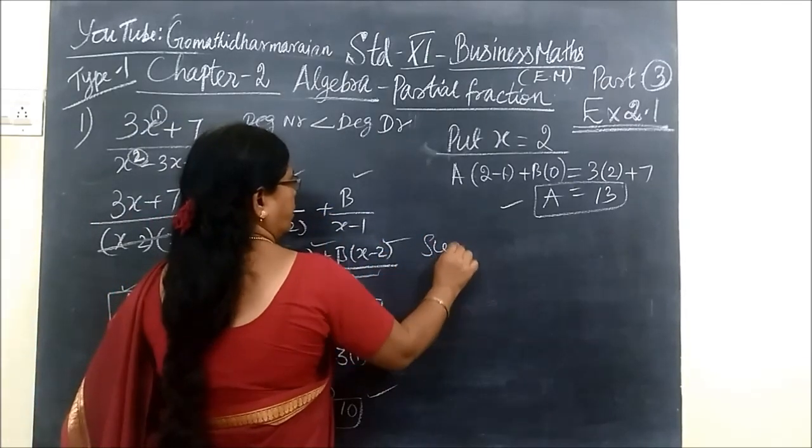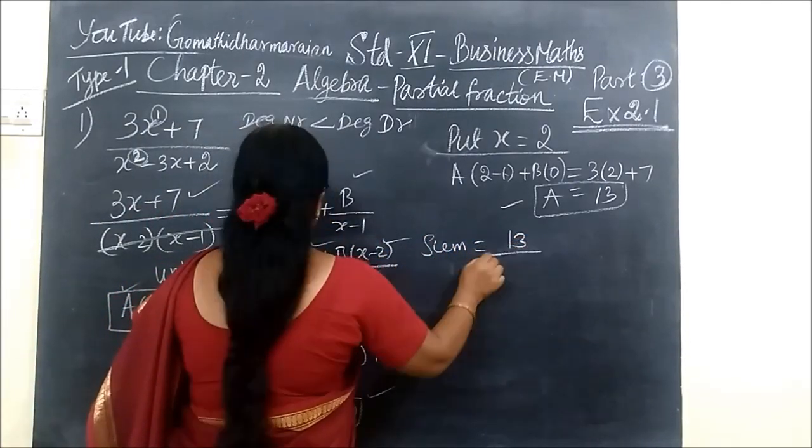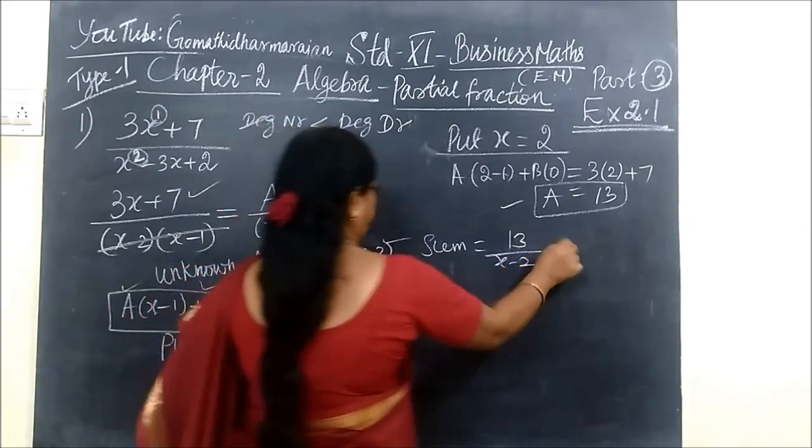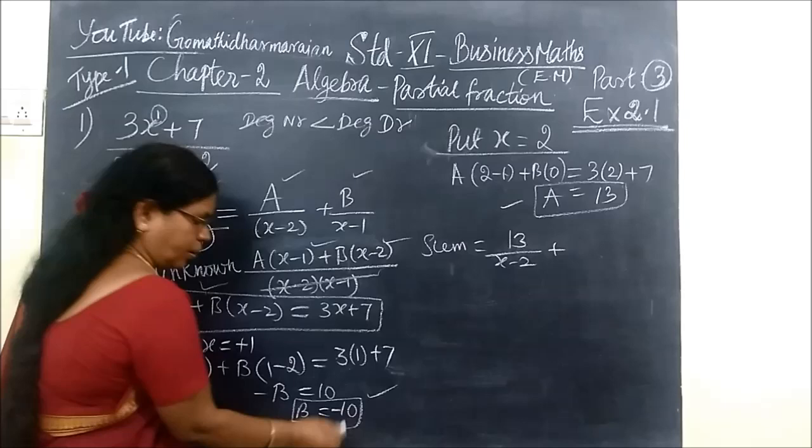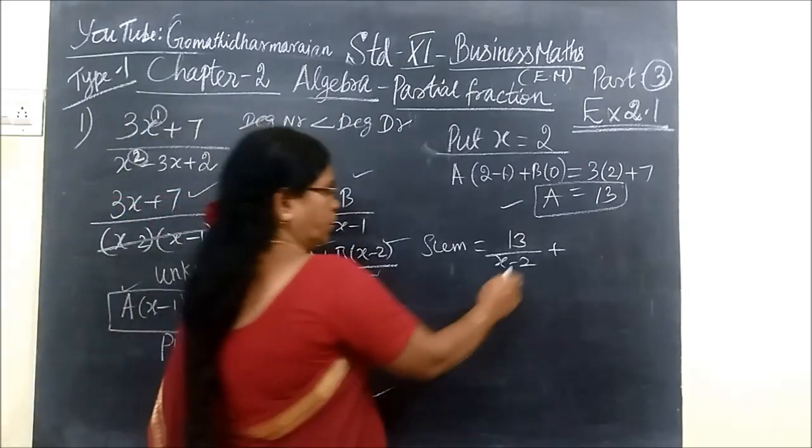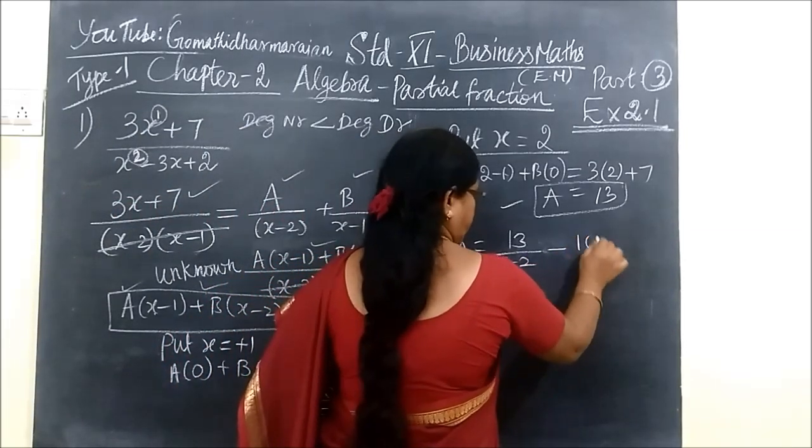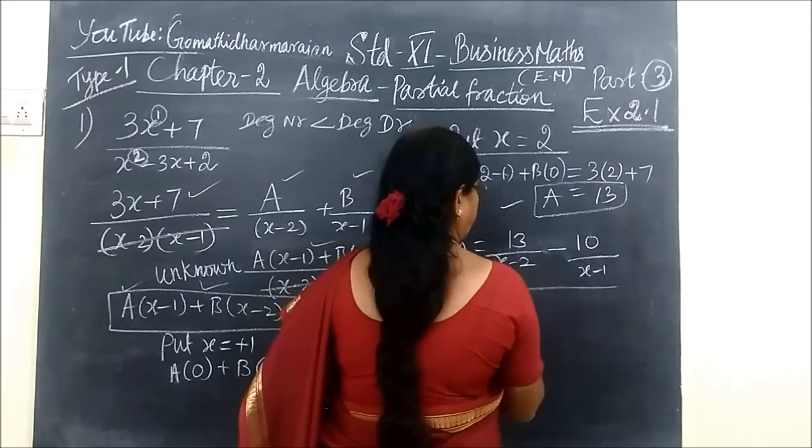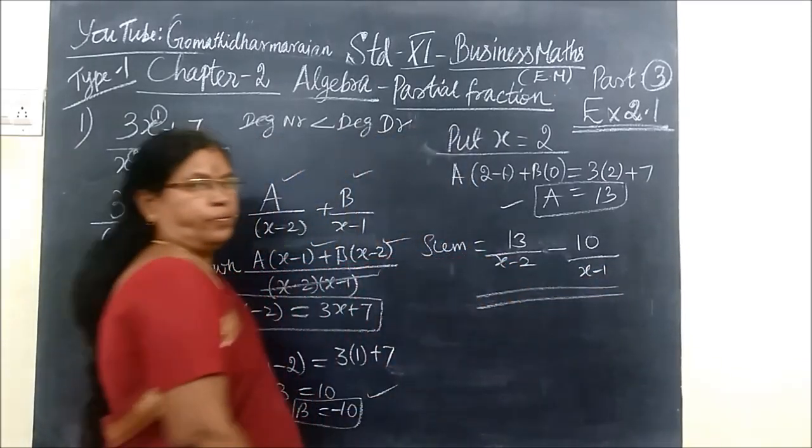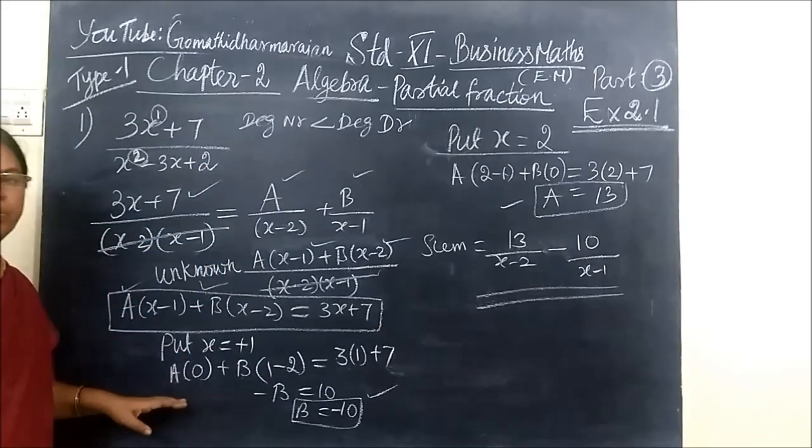Now you have found the value of A and B. You substitute here. Therefore, the sum equal to, for A you are writing 13 by x minus 2, then for B, minus 10 by x minus 1. This is partial fraction.